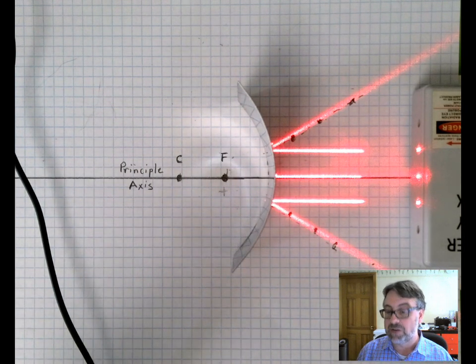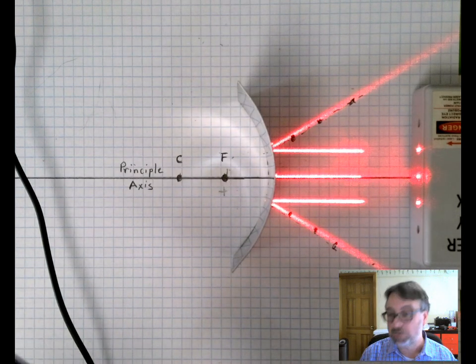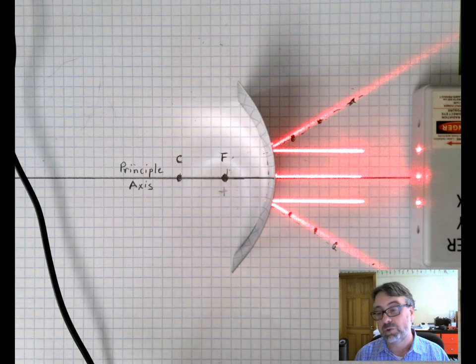In this configuration the mirror is a convex mirror. And because the focal point is on the virtual side of the mirror, we would say that the focal point is negative.